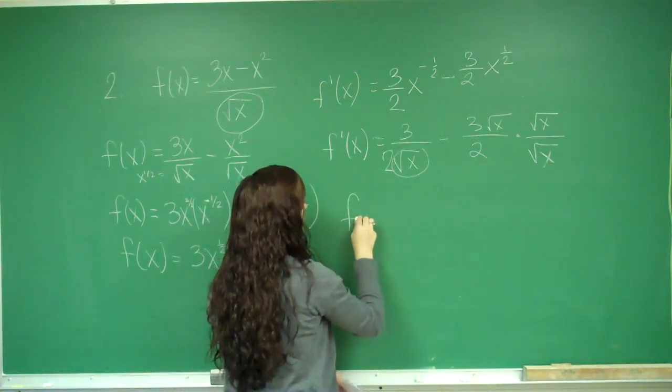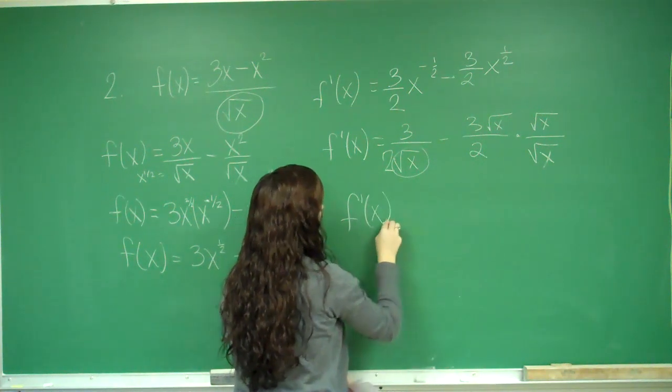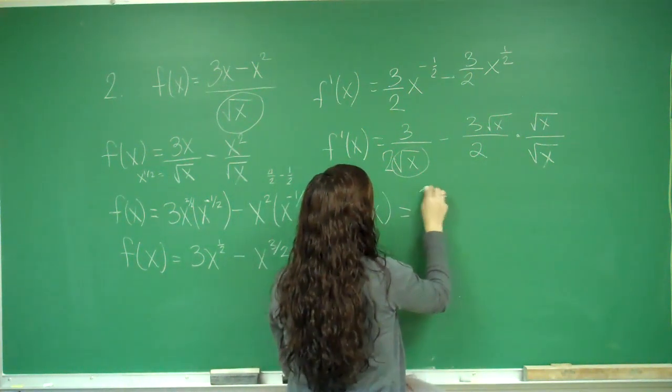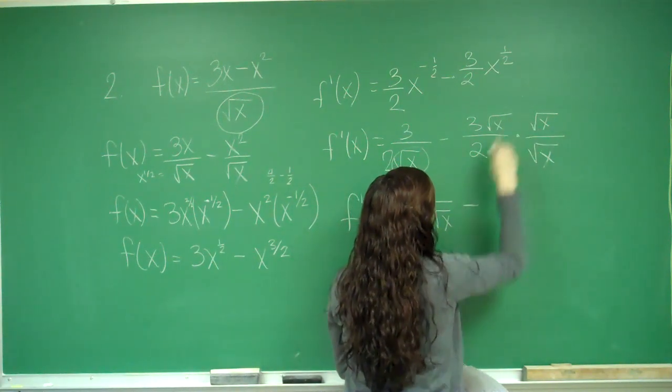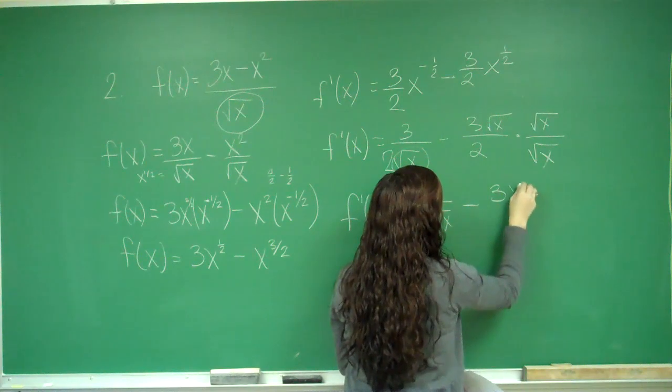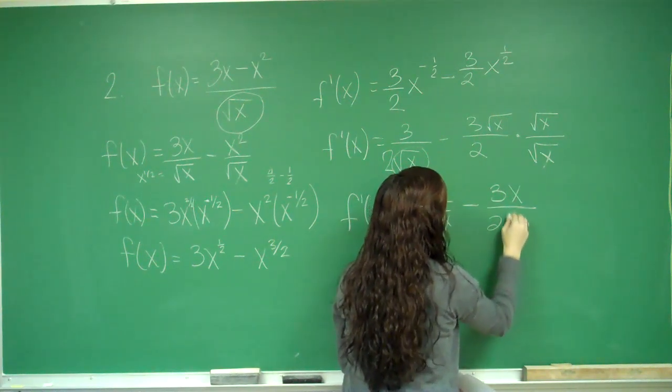I have f prime of x is equal to 3 over 2 square root of x. Minus root x times root x is x. So 3x over 2 square root of x.